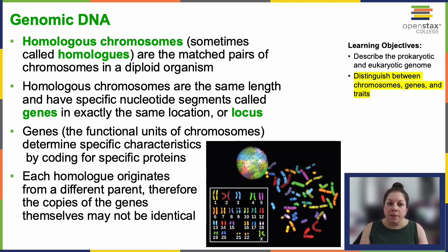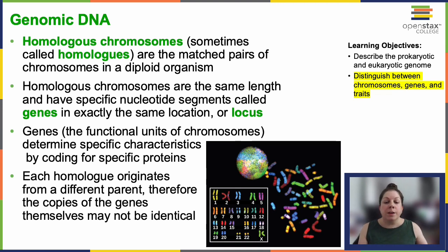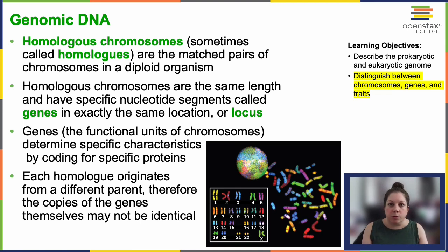These slight variations in traits, like blood type, eye color, and height, contribute to the diversity within a species. And this is true for all species, not just for humans.